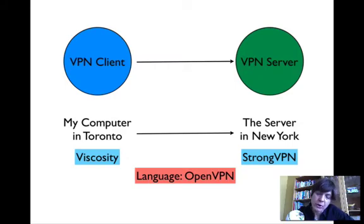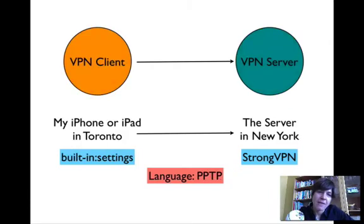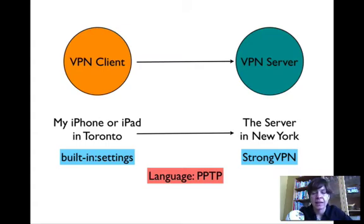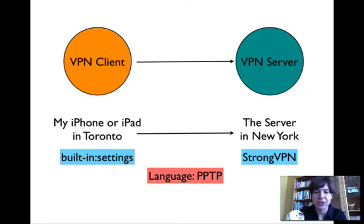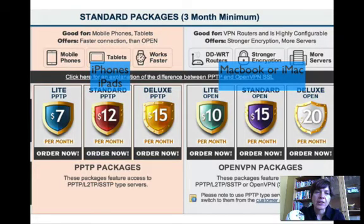I use OpenVPN because I have a Mac and it's easy. You'll need to know this because you're going to order a package and it will ask you what language you want. If you have an iPhone, iPad, or a mobile device, same thing — you really need to get that secured over a VPN as well. It's actually easier to install. The language I've used to secure my iPad and my iPhone was PPTP. That's just the language you need to know when you are ordering a package. Packages come in two shapes: one for your mobile device and one for your laptops or computers.